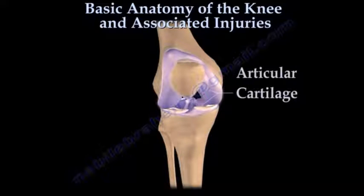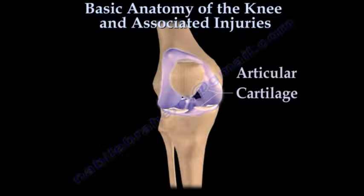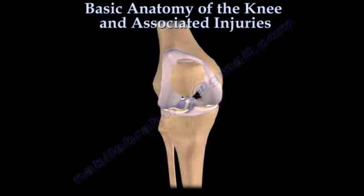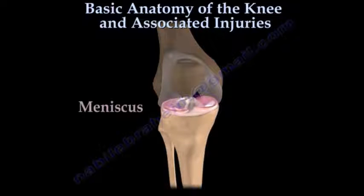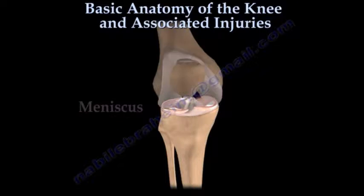Inside the knee, you will find a smooth articular cartilage that covers the joint surface. Resting on top of the tibial cartilage, you will find the meniscus, which improves stability of the joint and helps distribute weight.